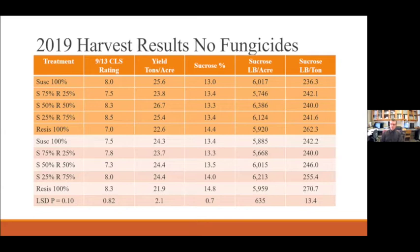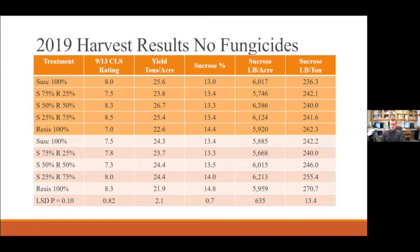Here are the results for plots that did not have fungicides applied. You can see the 100% resistant variety really stood out. In the top set, the 100% resistant variety was better than all other treatments in the CLS ratings and statistically better than all treatments in the sugar percentage and sucrose per ton columns. It was the same story in variety set number two — except CLS ratings were more even — but by the time you move to the sugar percentage and sucrose per ton columns, the 100% resistant variety really stood out above all other treatments.